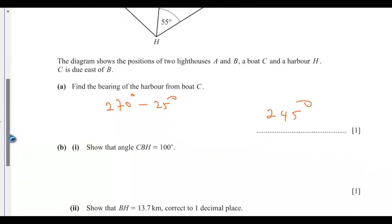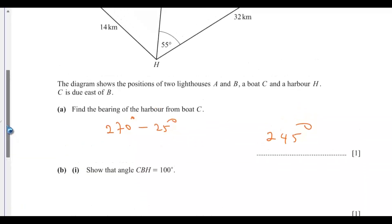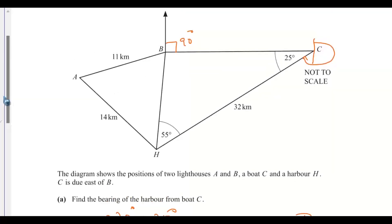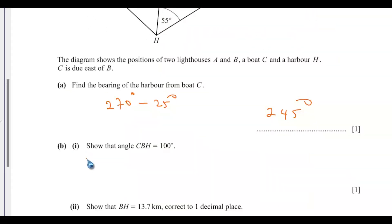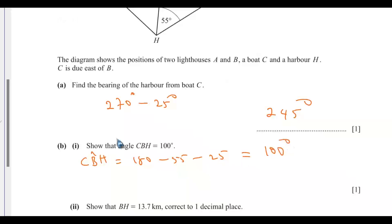Part B1.1: show that angle CBH equals 100 degrees. This is angle CBH. We know that this, this, and this add up to 180 degrees. So angle CBH equals 180 minus 55 minus 25, which equals 100 degrees.